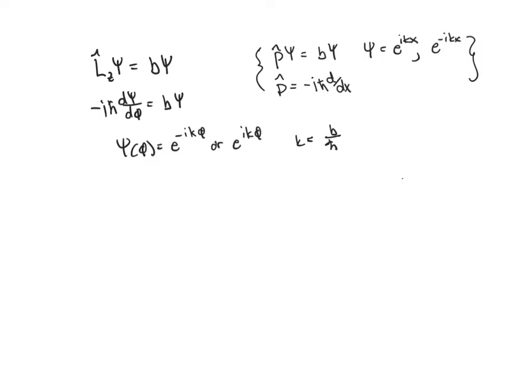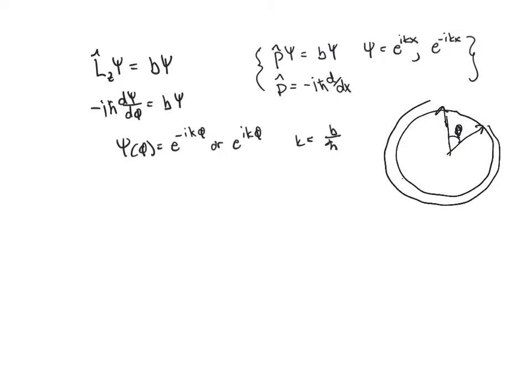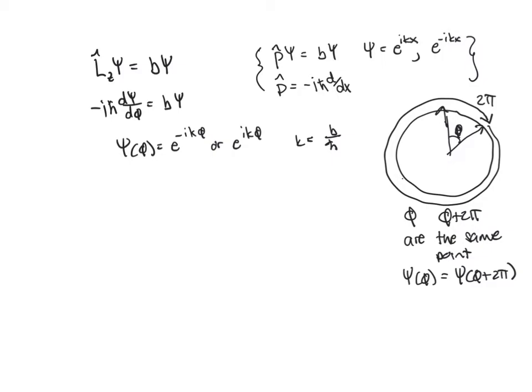Unlike with linear motion, I have to be a little bit careful here because my particle is going in a circle. If it starts out at some angle phi from the x-axis and I go all the way around 2 pi, that takes me right back to where I started. So the point phi and phi plus 2 pi are the same point. And if those are the same point, then my wave function has to be the same at phi as it is at phi plus 2 pi. Otherwise I would have two different probabilities at the same point in space, and that can't be true if I'm going to interpret my wave function squared as the probability of finding the particle.